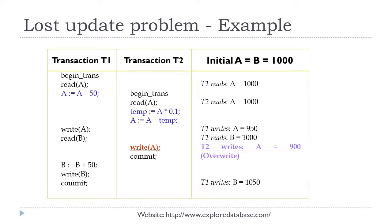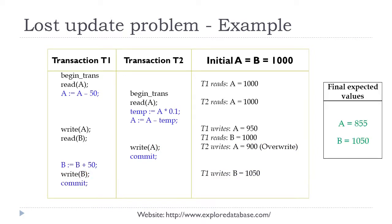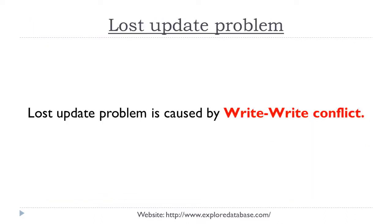T2 writes and overwrites A. If we had executed them in serial order with T1 first, we would expect A equal to 855 and B equal to 1050. But due to the overwriting, the result is A equal to 900 and B equal to 1050 — an inconsistent state. This lost update problem is caused by a write-write conflict: multiple transactions trying to perform a write operation on the same data item.